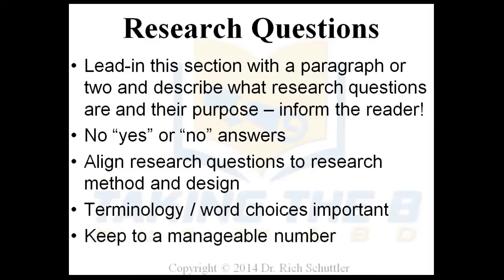I'm not saying you can't have more. I've had a doctoral dissertation student who had 11 in a quantitative study because there were 11 individual factors for a program she was assessing. There's nothing wrong with that. But remember, this is a doctoral dissertation — the more convoluted you make it, the harder it's going to be on you. Ideally, for a quantitative study, if you have three independent variables to one dependent variable, that's a pretty manageable study. For qualitative studies, my doctoral dissertation students will often have one question because that's all you need. Let's just try to keep it manageable.